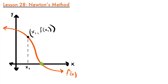Newton's method is going to allow us to approximate these more difficult x-intercepts that we might not be able to find otherwise without using some fancy calculator. I'm going to show you how Newton's method is derived, or where the formula comes from, and then we'll show you how to use that formula for an example problem. I highly recommend that you stay and see where the formula comes from, because it might help you understand what you're doing as you use Newton's method.